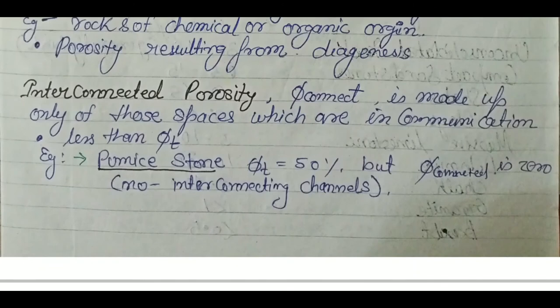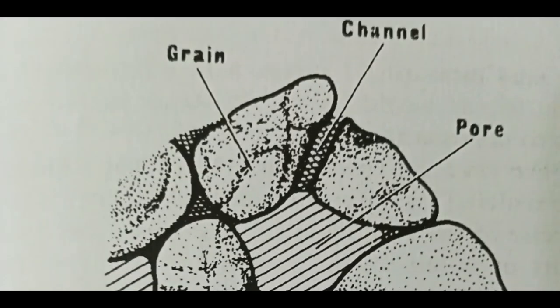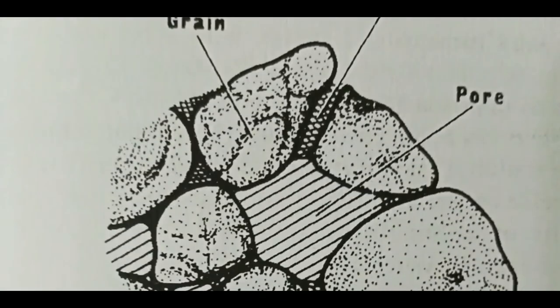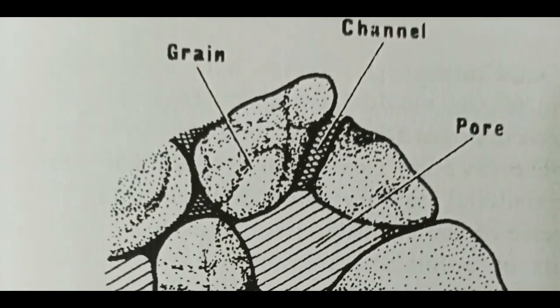Interconnected porosity (phi-connect) considers only those pore spaces that are in communication — only connected channels. For example, pumice stone has a total porosity of 50 percent but its interconnected porosity is zero because there are no interconnecting channels. In a figure, grains, channels, and pores are visible; total porosity includes all species, channels, pores, and fissures.